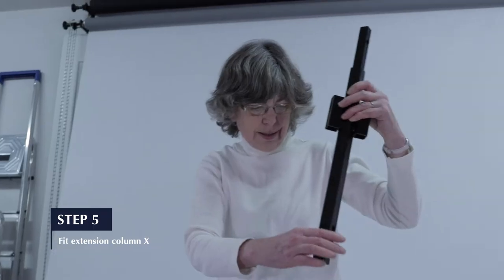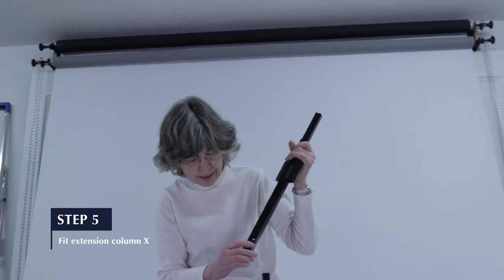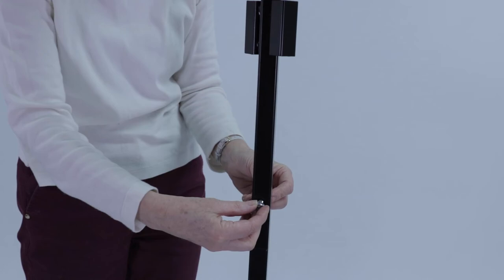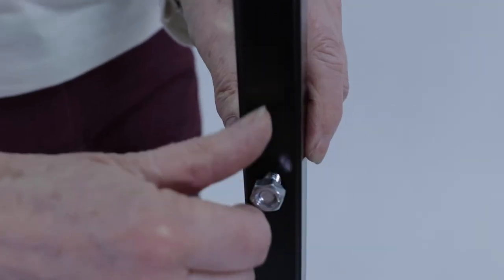Step 5. Fit extension X onto lower column C. Again, make sure the holes line up so you can easily fit bolt F and attach the nut.